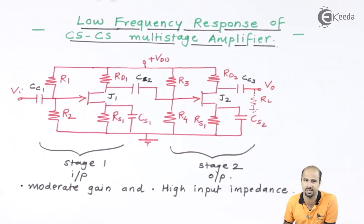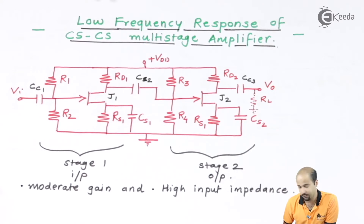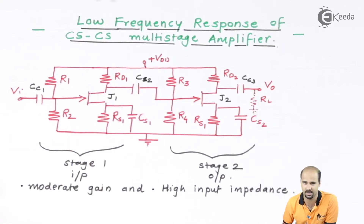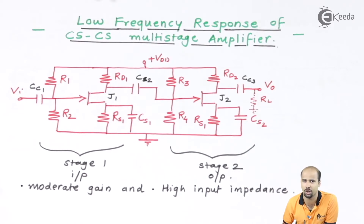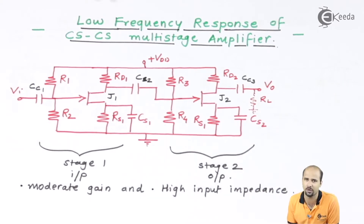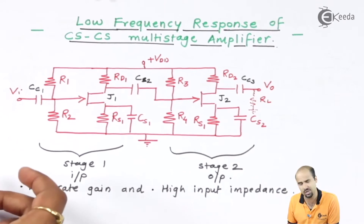In addition to that we have CS1 and CS2, which are optional bypass capacitors. If you want higher gain, we take these bypass capacitors in parallel with RS1 and RS2. If you want moderate or less gain with a negative feedback effect, we will not use CS1 and CS2. The number of capacitances and resistances will form RC circuits, and these RC circuits are responsible for your lower cutoff frequency.